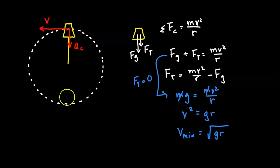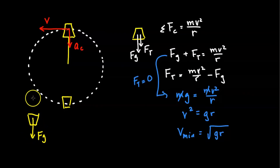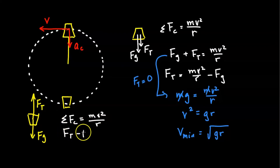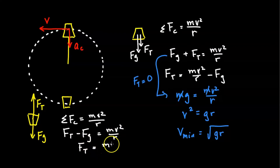At the bottom of the swing, the force diagram has F_g pointing down and F_t pointing up toward the center. The centripetal net force must point toward the center, so F_t must be greater than F_g. Using F_c = mv²/r, we get F_t − F_g = mv²/r, so solving for F_t gives F_t = mv²/r + F_g.